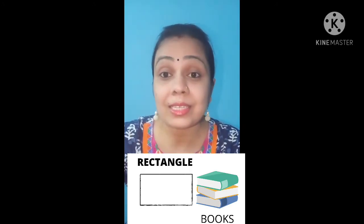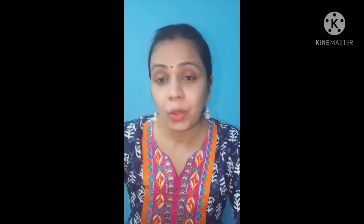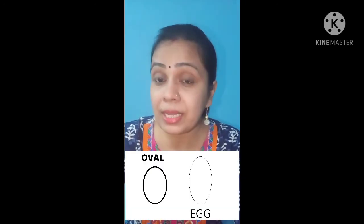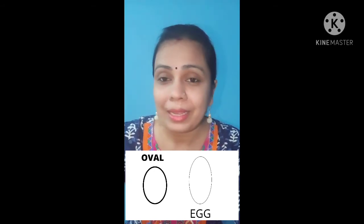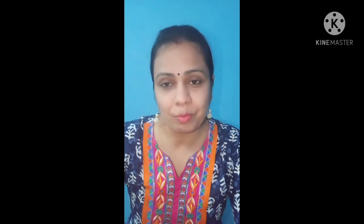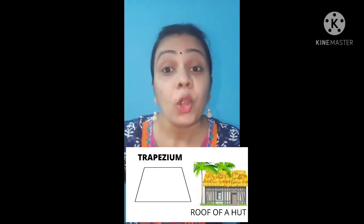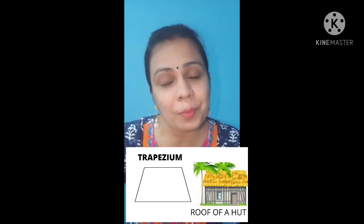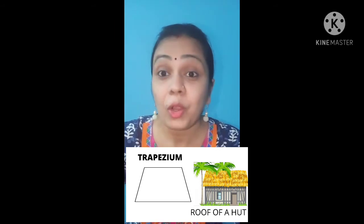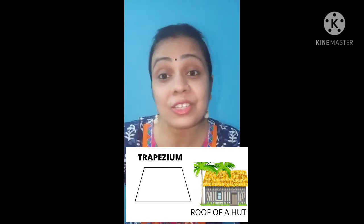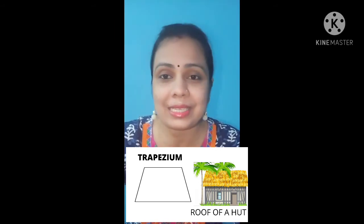Next, this is oval. Which shape is this? Oval. Egg is oval. Next, this is trapezium. Which shape is this? Trapezium. Roof of a house is trapezium.